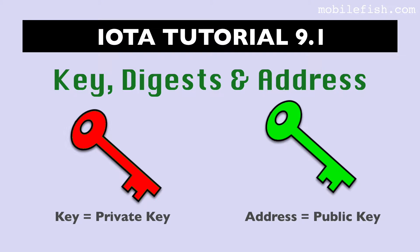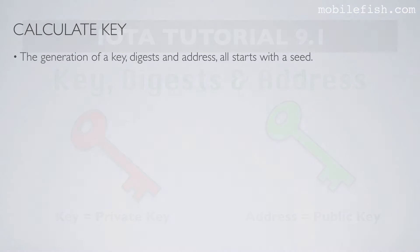In IOTA tutorial 9, I quickly explained how an IOTA address is calculated. In this video, I will explain in detail how the key, digest, and address are calculated. The generation of a key, digest, and address all starts with a seed.